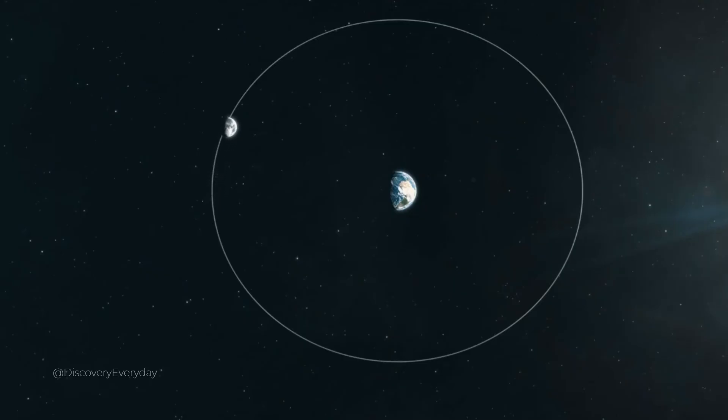When the sun dies, it will become a red giant and envelop the Earth and everything on it. But don't worry, that won't happen for another 5 billion years.